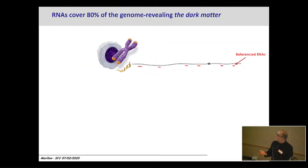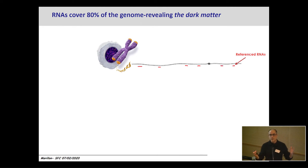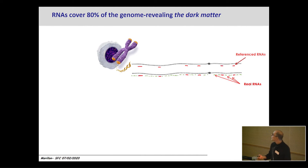We know from the GENCODE catalogues that there is reference annotation for RNA in the genome, but also from all of these transcriptome approaches that most of the genome is transcribed — with pervasive transcription or normal transcription. At the end of the day, in addition to reference RNAs in the genome, there are plenty of RNA molecules that represent the real transcriptome.